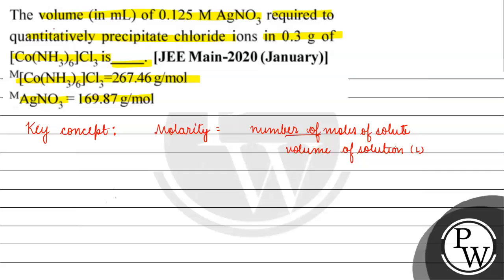Now agar hum dekhein, in the question, humare paas complex ka diya hai: [Co(NH3)6]Cl3. Ab ye jo coordination compound hai, agar iski baat karein, ye jo coordination sphere mein quantity hai ye toh dissociate nahi karti. Ye Cl3 ions milenge. Right? Ye jo counter ion hai, agar isko paani mein daalenge toh humare counter ions hi milenge aur kitne milenge - toh humein milenge 3 chloride ions. Right, 3 chloride ions.